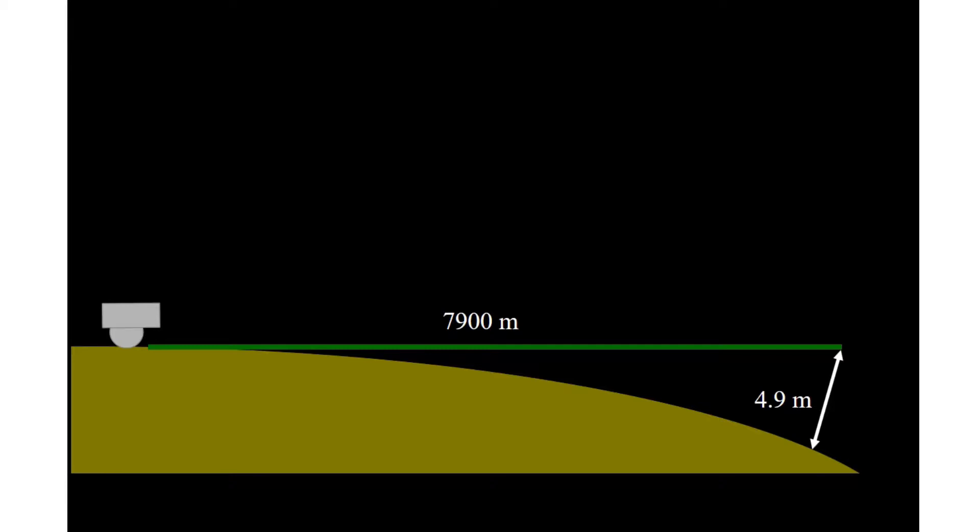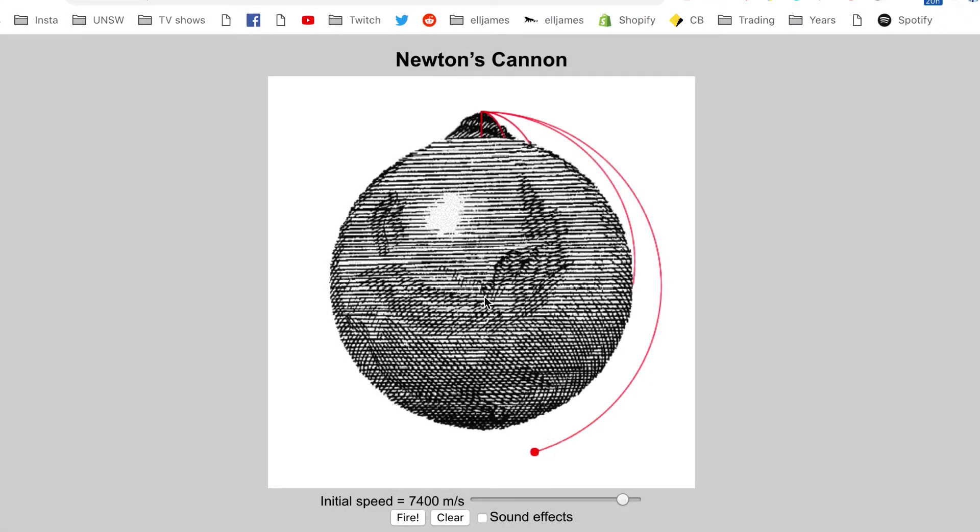4.9 meters is also how far an object will fall in one second. And that means that if you launch a cannon at 7,900 meters per second, it will fall at the same rate Earth curves out of the way. It's trying desperately to go towards the center. Except that going towards the center keeps changing its direction. And then you hit yourself in the back of the head.